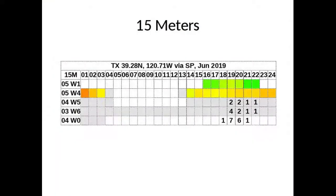Jim noted that at the top of the event, 15 meters was open for a while and they made some East Coast contacts, which is very rare. He asked if that came from the 15-meter first window. Looking back at the 15-meter chart, the W1s didn't show up, but the W0s were the ones that showed.